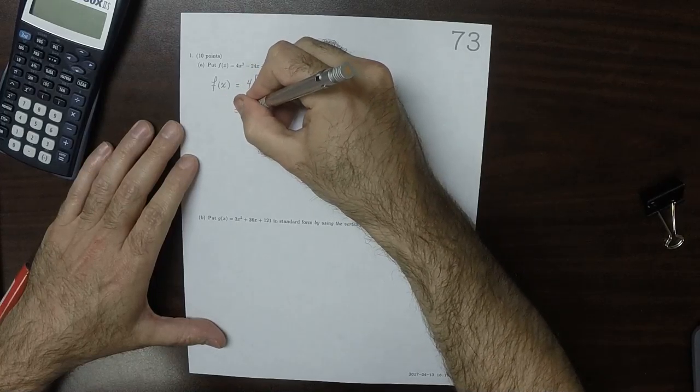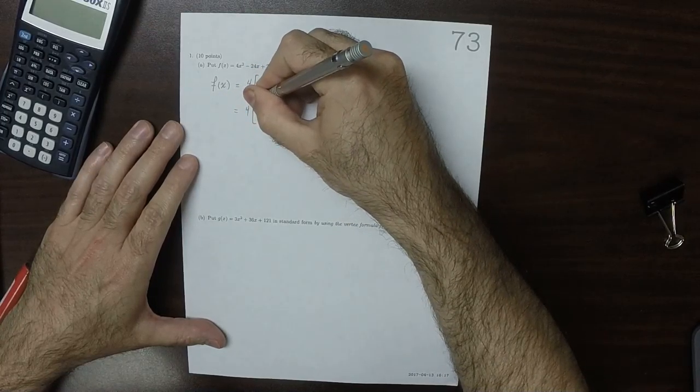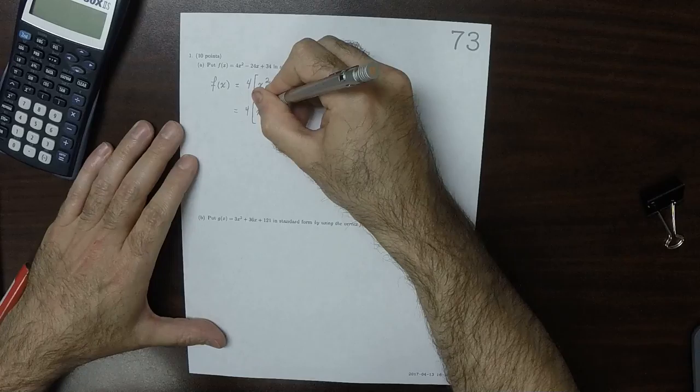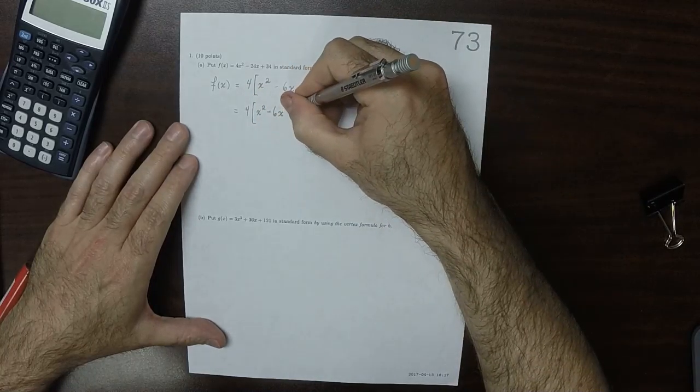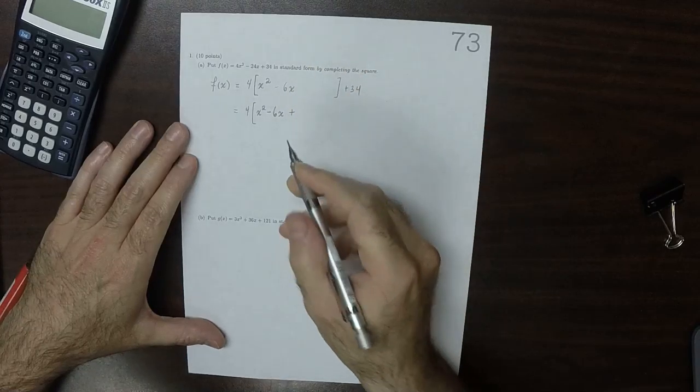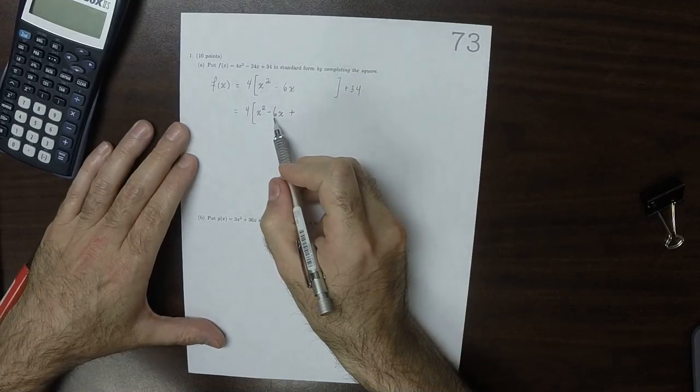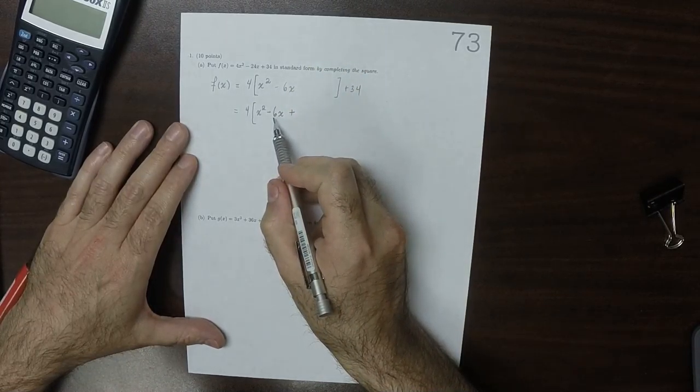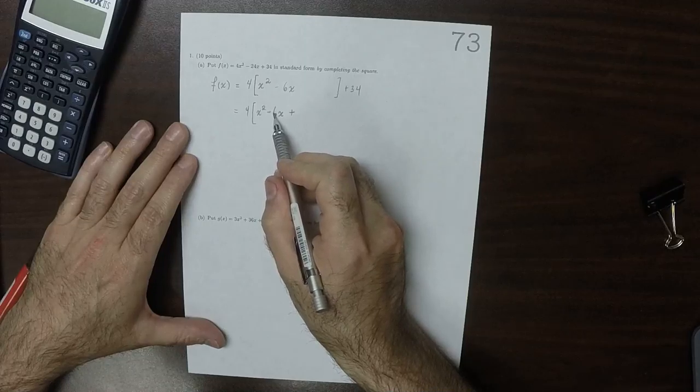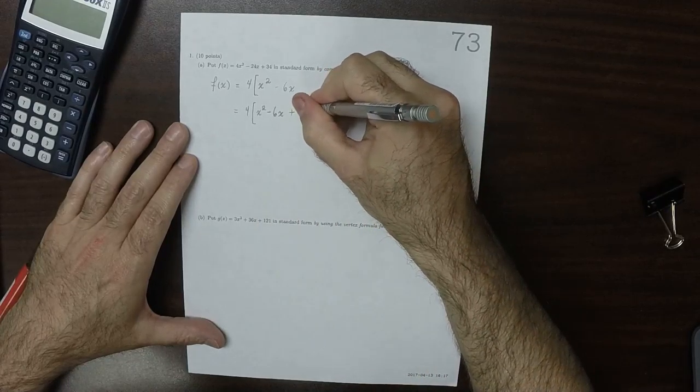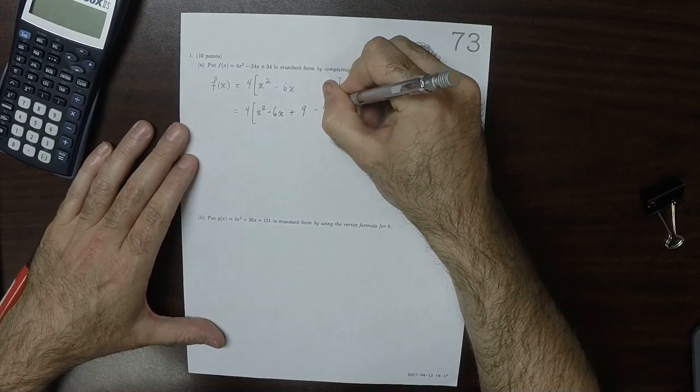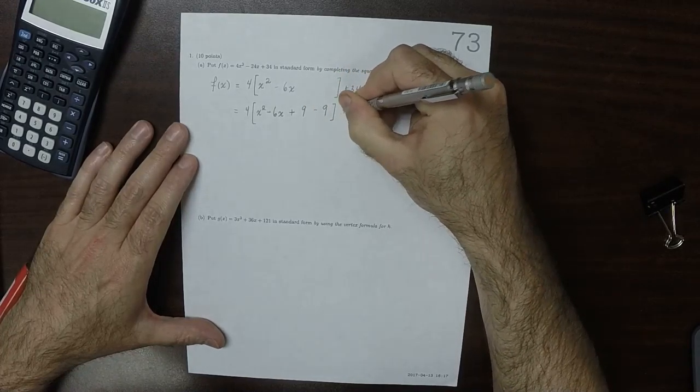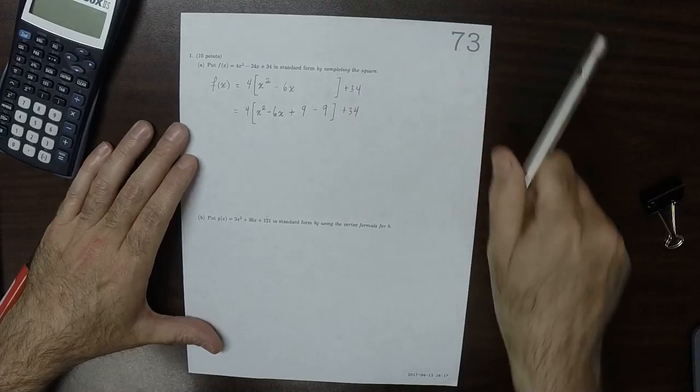And then this will be 4, and then x squared minus 6x. Now we're going to add half of negative 6, which is half of negative 6, which is negative 3, and then square it. So then add 9, and then subtract 9, plus 34.